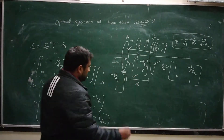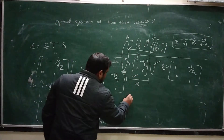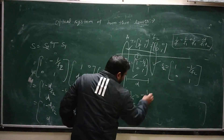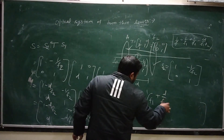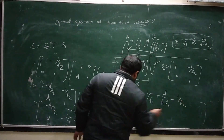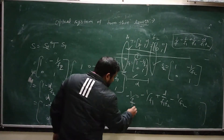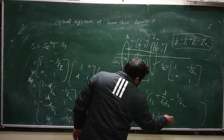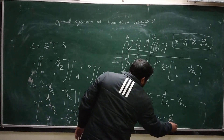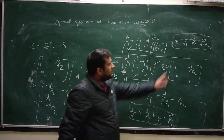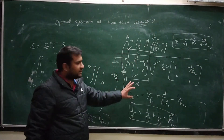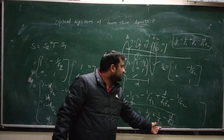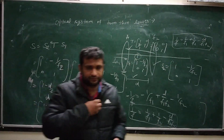This (2,1) element is the reciprocal of the focal length of the combination. So we have: −1/F = −1/f1 − 1/f2 + D/(f1·f2), which gives 1/F = 1/f1 + 1/f2 − D/(f1·f2). This is the formula for the focal length of the combination of two thin lenses separated by distance D, now derived using the matrix method.